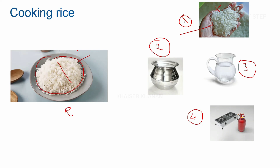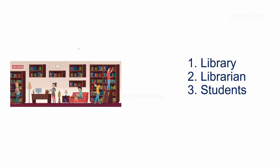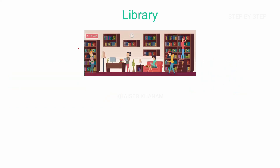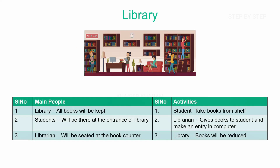Now let's move forward and understand Redux architecture using the example of a library. Now in a library, we have the library itself. We have a librarian who will be giving the books, and finally we have students — people, whoever go inside the library. We have the library, we have students, and we have the librarian.